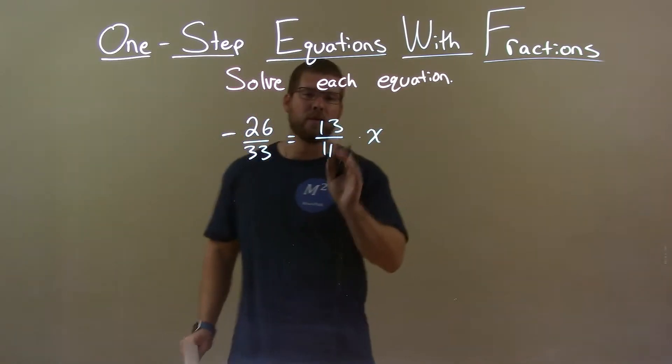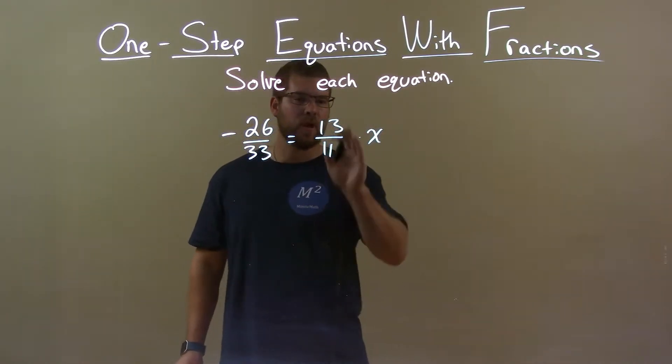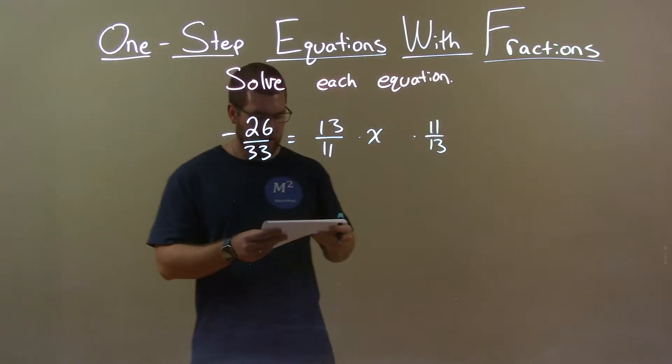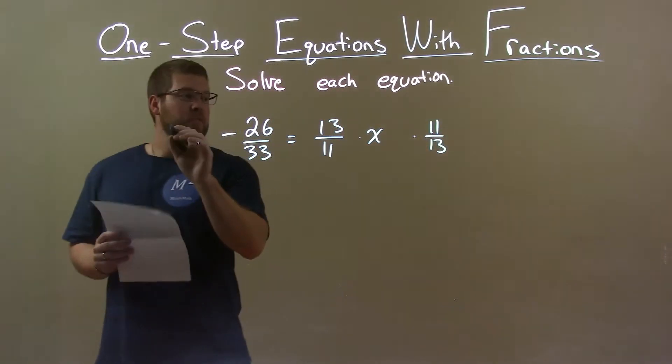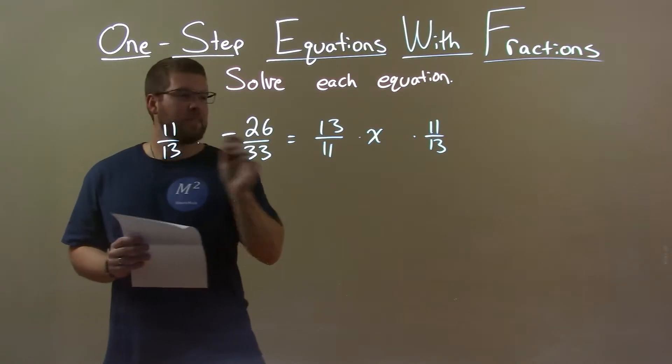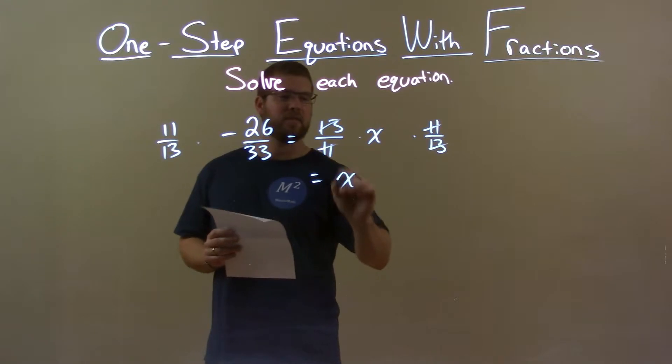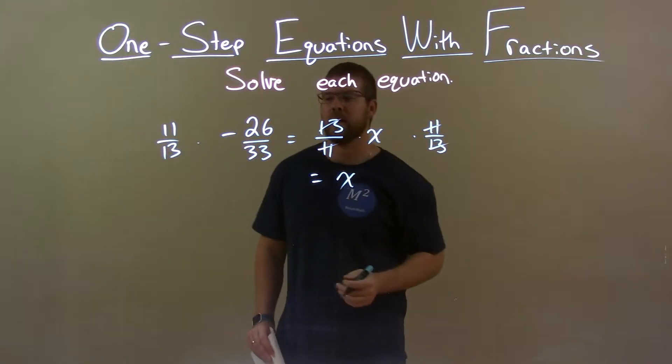Well to get x by itself I'm going to multiply both sides by the reciprocal of 13 over 11, which is 11 over 13. Now I've got to do that to both sides, 11 over 13, and this eliminates here, the 13's and 11's cancel, eliminates the coefficient on the right giving me x by itself.